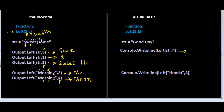Let's take a look at our code in Visual Basic. When this instruction is executed, we extract the first four characters from the left side — one, two, three, and four — so this is what's going to be output. When the next instruction is executed, we want to extract the first three characters from the left side: H, O, and N. So this is what's going to be extracted.